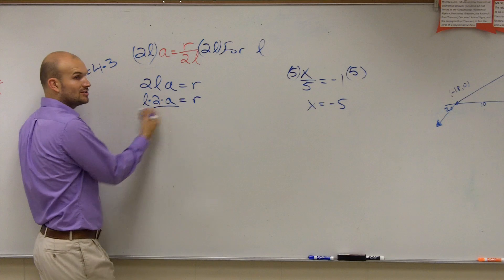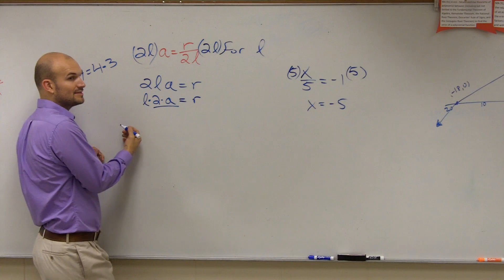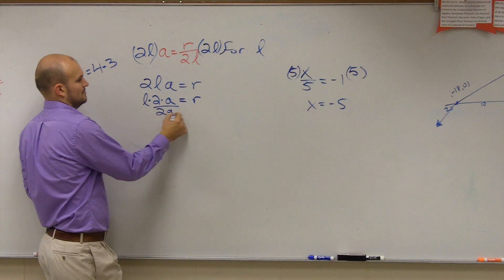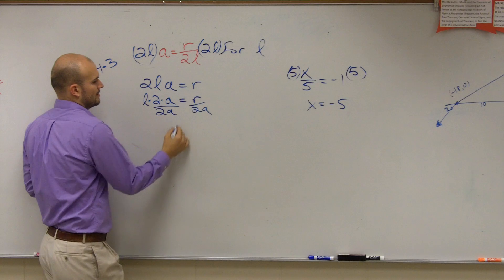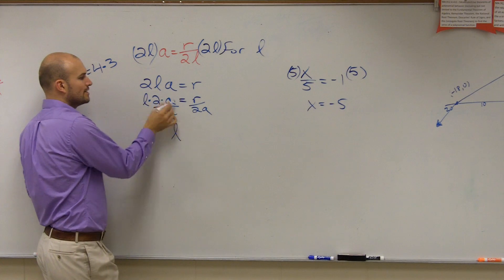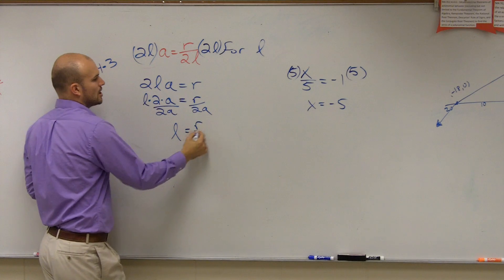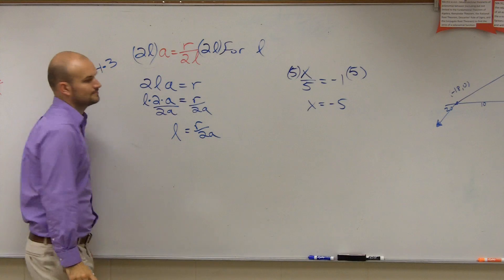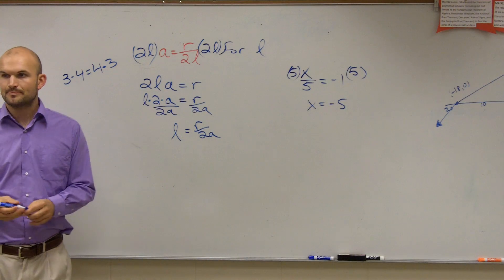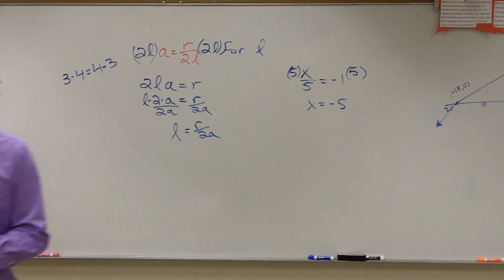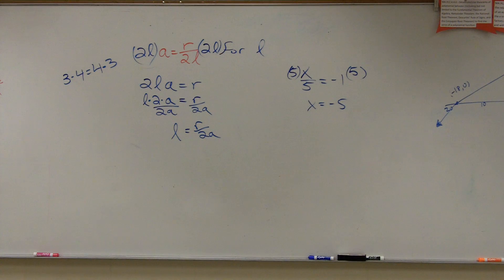So we can multiply them at the same time. Is it okay if we divide them at the same time? Yeah, it's okay. That divides into 1. 1 times L is L. L equals R divided by 2A. Okay? Cool? All right.